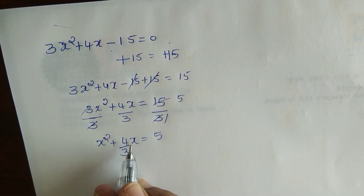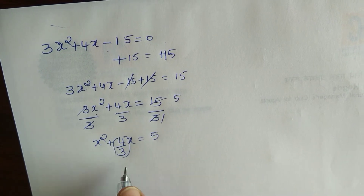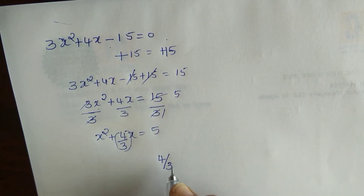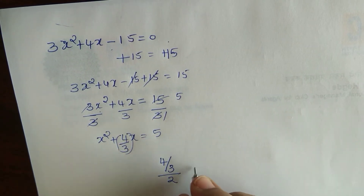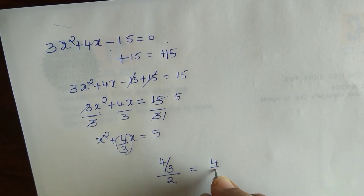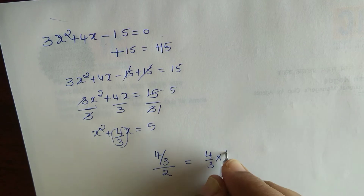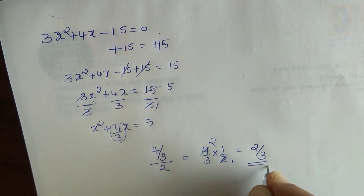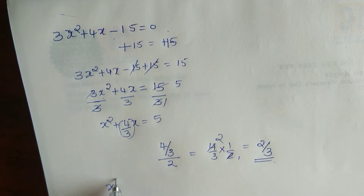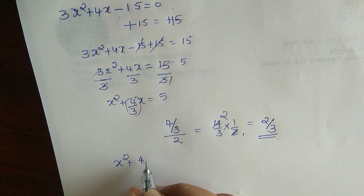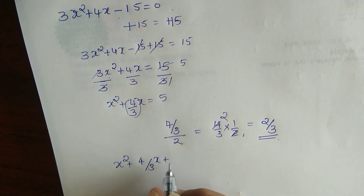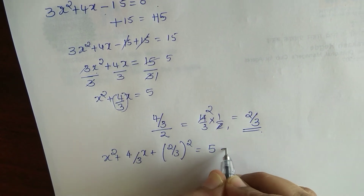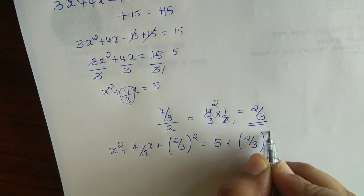The linear coefficient of x is 4 by 3. Half of this number is 4 by 3 divided by 2, which equals 2 by 3. We have to add 2 by 3 whole squared to both sides of the equation: x squared plus 4 by 3 x plus (2 by 3)² equals 5 plus (2 by 3)².